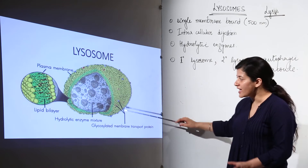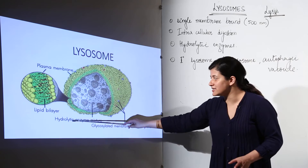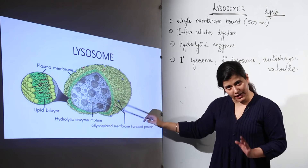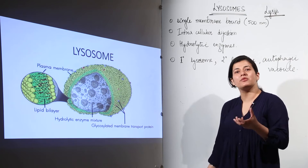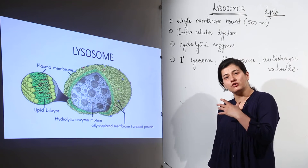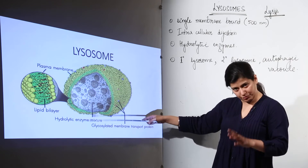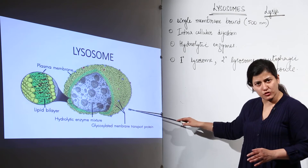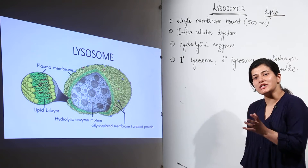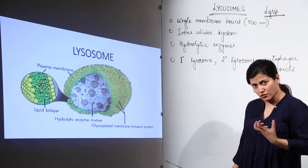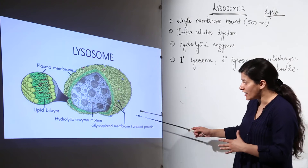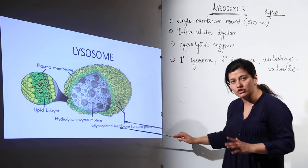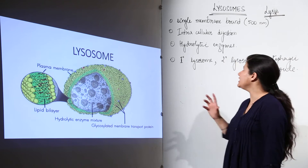A lysosome is a single membrane-bound organelle which has lots of hydrolytic enzymes present inside it. The single membrane has a lipid bilayer, as every membrane has the universal structure of a lipid bilayer. There are glycosylated membrane transport proteins so that whatever material is to be taken up by the lysosome for digestion can be taken up with the help of these transport proteins. This is the basic structure of lysosomes.